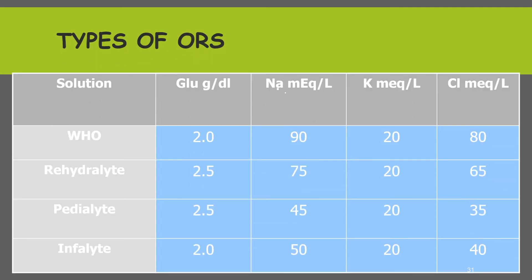There are different types of ORS; the most commonly used is the WHO type, which has around 2 grams of glucose per 100 ml, 90 mEq per litre of sodium, 20 mEq of potassium, and 80 mEq of chloride per litre.